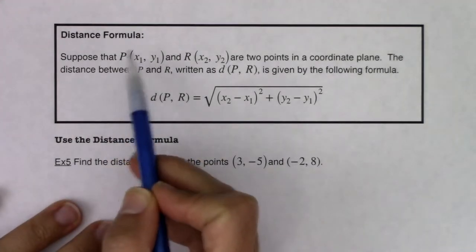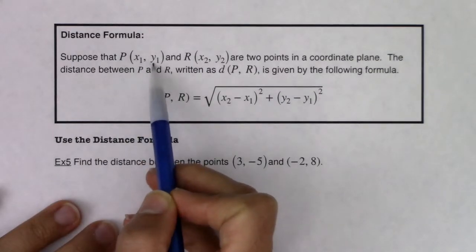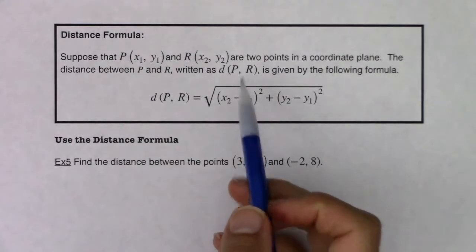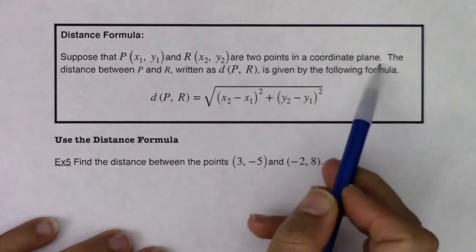So if I have a point P with its own x-coordinate and y-coordinate, which we'll call x sub 1 and y sub 1, and I have a second point R with its own x and y-coordinate, we'll call x sub 2, y sub 2, if there are two points on the coordinate plane.